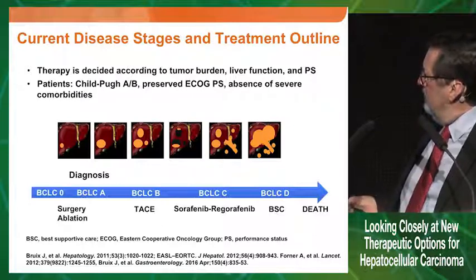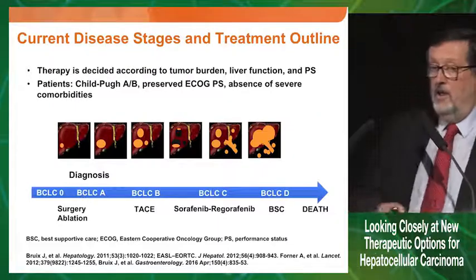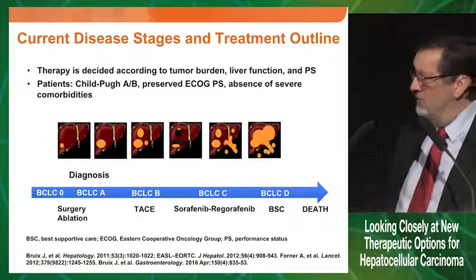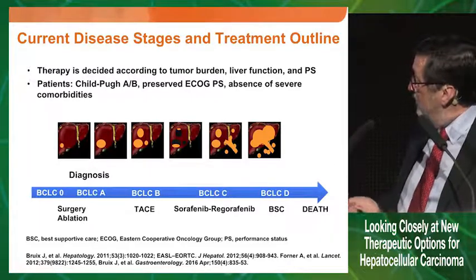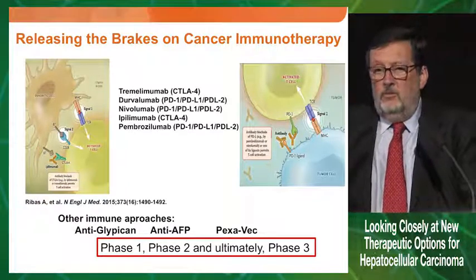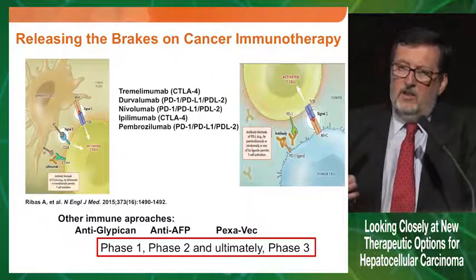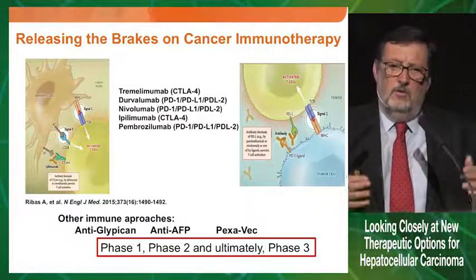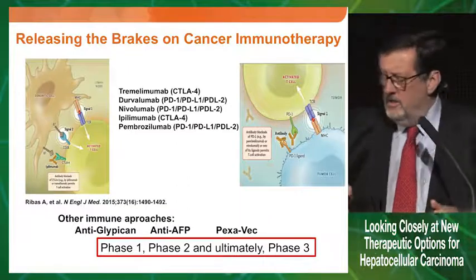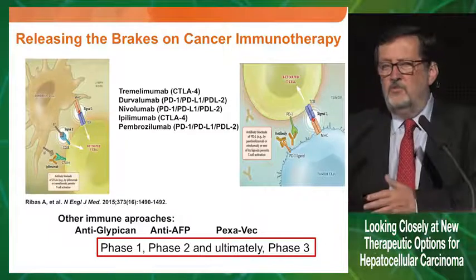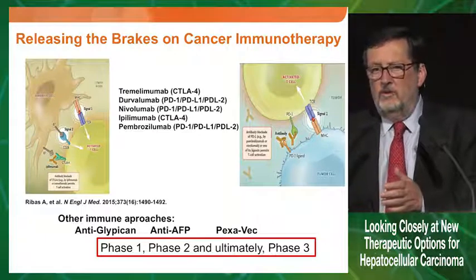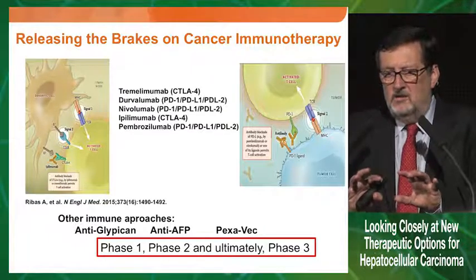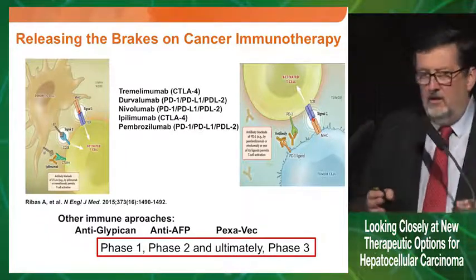The treatment scheme now has sorafenib and Regorafenib in sequence, and this is going to interact with the first-line and second-line landscape in more complicated ways, requiring new treatment pathway drawings. Everyone is talking about immune modulation, and I understand the enthusiasm, but I have seen wishful thinking before — sunitinib, everolimus, brivanib, ramucirumab — all gone, all negative. I'm sure immune modulation has a role; we just published on the risk of tumor activation during antiviral treatment for hepatitis C because immune modulation is distorted. Immune system prevents tumor growth, and enhancing this may bring success, but how to do it is currently research.